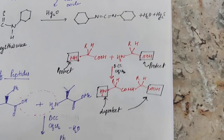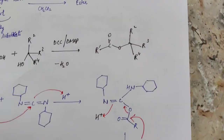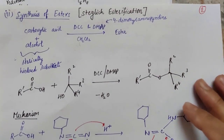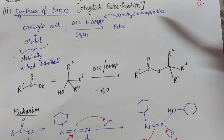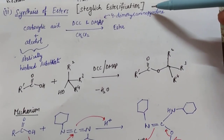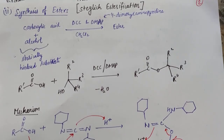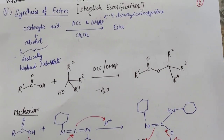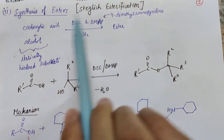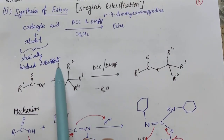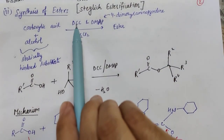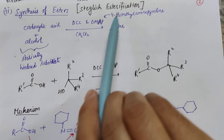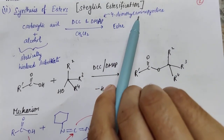The second reaction DCC facilitates is ester synthesis via the Steglich esterification. This is a reaction in which a carboxylic acid reacts with an alcohol to form an ester. It is especially used in the case of sterically hindered substrates, and uses two reagents: DCC and DMAP (4-dimethylaminopyridine).